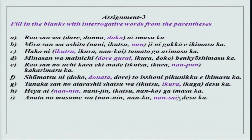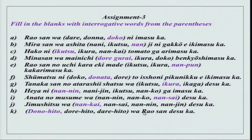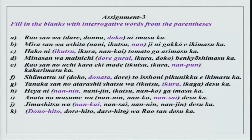Anata no musume wa nan-sai desu ka? Nan-ko is for number, nan-nin is for person. Jimushitsu wa nan-kai desu ka? Nan-kai — jimushitsu is a place, so we ask which floor. Dono hito wa Rao-san desu ka? Dono hito is choice between two or three people. Dore hito cannot be used because with kore, sore, are, and dore, a noun is not used. And dare hito — hito will not be used because dare itself means 'who'.